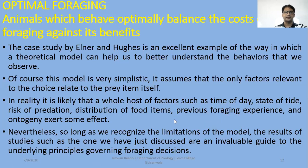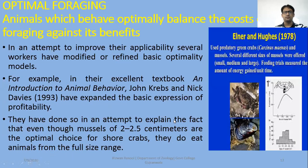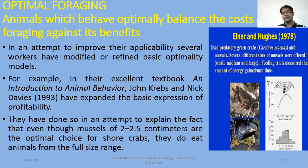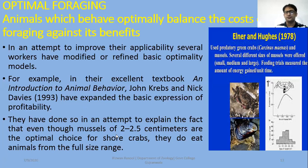There is another experimental model using snails and mussels, which were the food of crabs. The shore crab feeds on mussels, and a model is given here. They attempted to explain the fact that mussels of 2 to 2.5 cm are the optimal choice for shore crabs. The crabs do eat animals from the full size range as well, but why is 2.5 cm the preferable choice for optimal feeding?